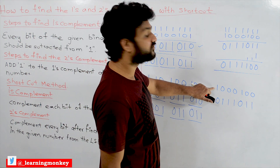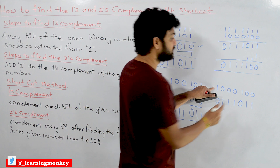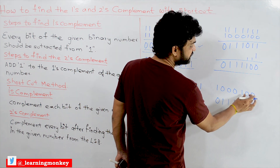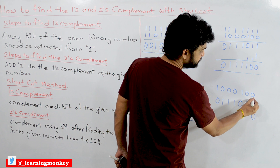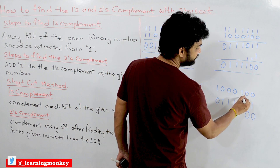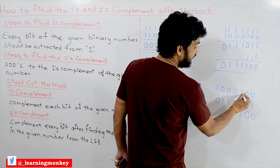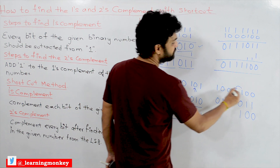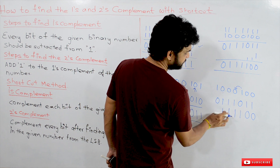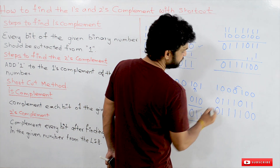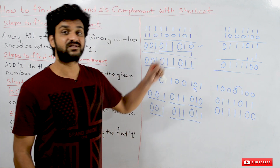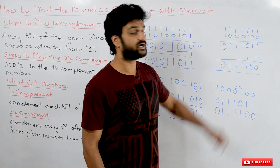For the second number, start from the LSB and search for the first one. Take bits as they are until the first one is found, then take that bit as it is, and complement every bit after it. Three zeros complement to three ones, and one 1 complements to 0. The twos complement of 1 0 0 1 0 0 is 0 1 1 1 0 0.